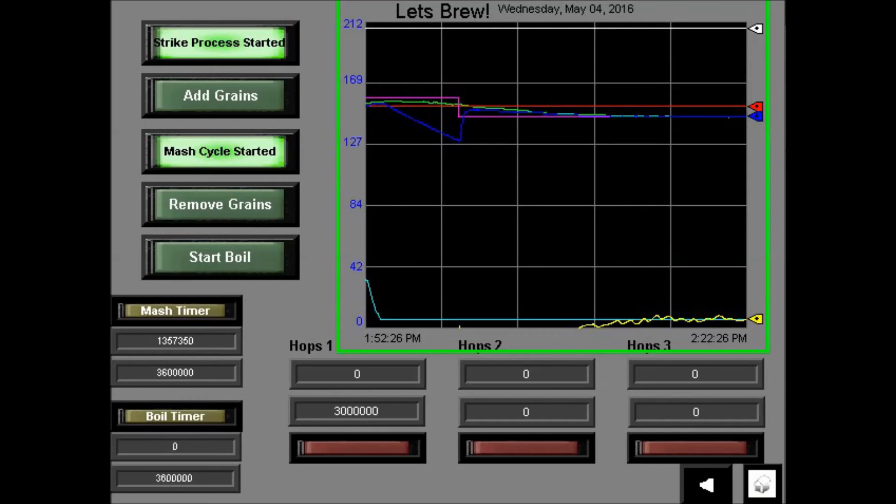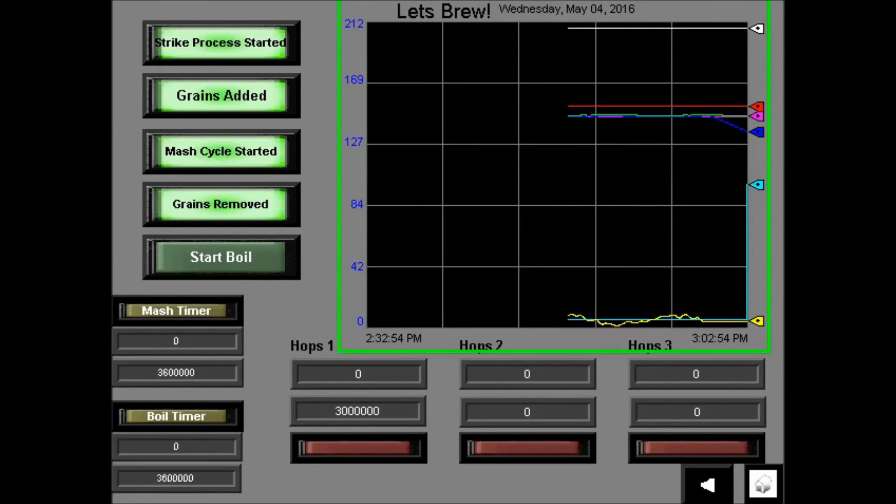Pressing the start boil button will initiate a timer that starts the boil subroutine. This temperature control does not use the PID to regulate the temp. Instead, once the RTD senses the boiling temperature, the heat and element is cycled on for 4 seconds and off for 2 seconds. This keeps a rolling boil, yet prevents over boiling.